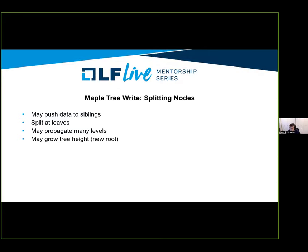When we run out of space in a node, we have to split into two nodes, but that's not as efficient. To avoid reducing data concentration, we first try to push data to a sibling. We push data to the left if possible, then to the right, and only if neither is possible do we split. When we split, it may propagate up many levels — if the parent is full and we can't push left or right, we must split the parent. We always try to push left or right first to reduce fragmentation, reduce the number of nodes used, and reduce tree churn. If we reach the root node and it's full, we're forced to split the root, which will grow the tree height.